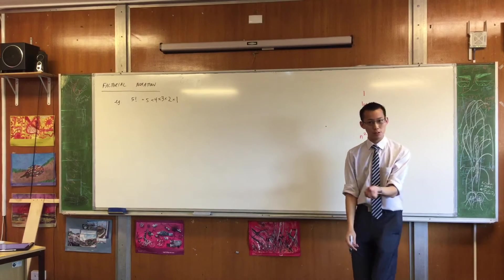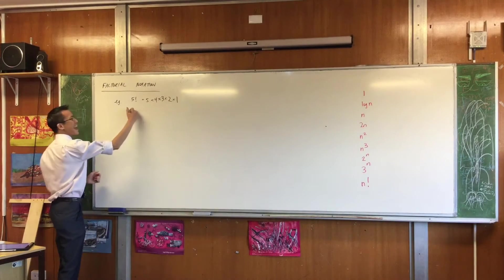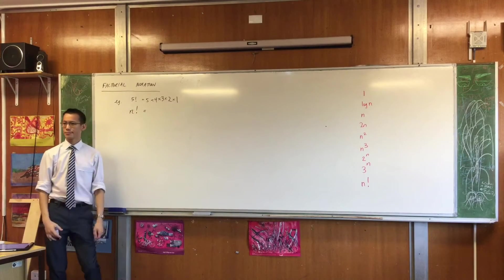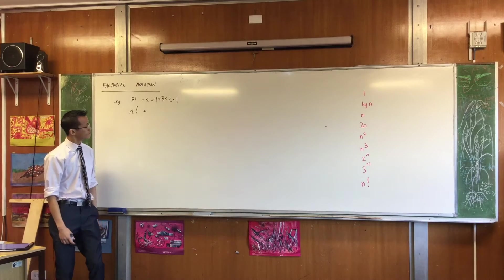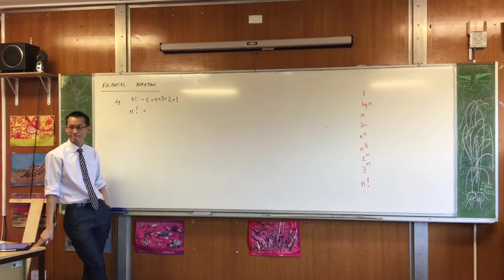So can we formalize this a little bit, generalize it? If this is 5 factorial, what is any number n with a factorial? Any takers? How am I going to start this thing off? What do you reckon?